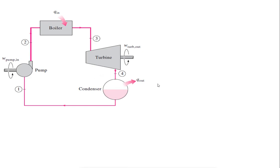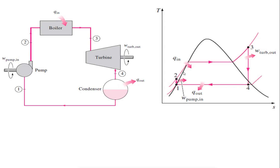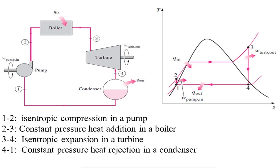Now let us see the TS diagram. This is the vapor dome — the saturated liquid line on the left, saturated vapor line on the right, and the critical point at the top. Process one to two is isentropic compression in the pump. Two to three is constant pressure heat addition — heat energy enters the cycle here. Three to four is isentropic expansion in the turbine, where turbine work is produced as work output. And four to one is constant pressure heat rejection, where Q_out is rejected. Process one to two requires work input.